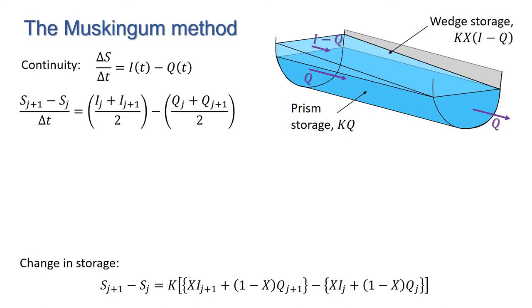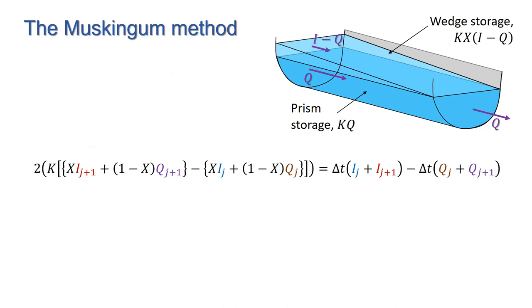We also have our expression for change in storage below, which we can substitute for s_(j+1) minus s_j, giving us this equation here. This can be rearranged to get q_(j+1) in terms of i_(j+1), i_j, and q_j.